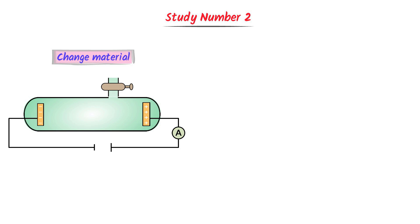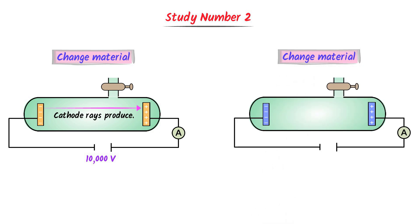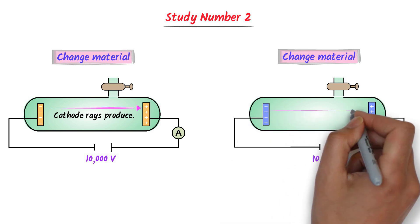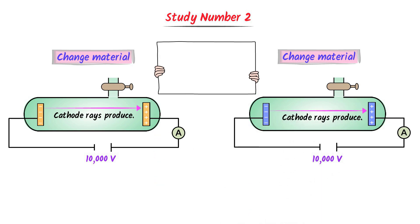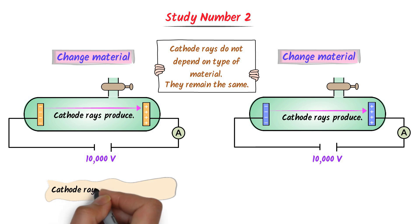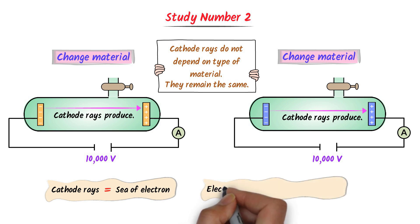In the second study, we change the material of both the cathode and the anode. When we provide high voltage, we observe that the same cathode rays are produced in this glass tube. We again change the material of both the cathode and anode, and again the same cathode rays are produced. So we say that cathode rays do not depend on the type of material — they are the same for all materials. Hence we conclude that cathode rays are nothing but a stream of electrons, and that cathode rays are the basic constituent particles of all materials, because all different materials produce cathode rays.